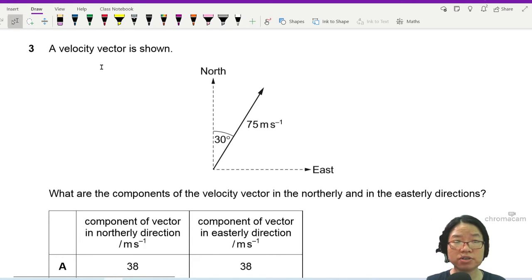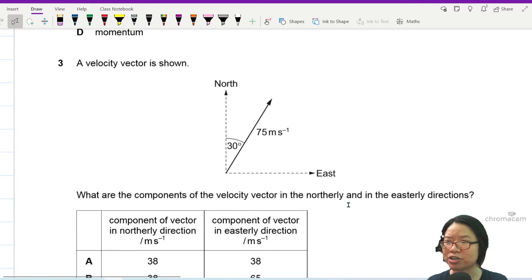Question 3. A velocity vector is shown, so you will expect some resolution of vector being asked in paper 1. What are the components of the velocity vector in the northerly and easterly direction?